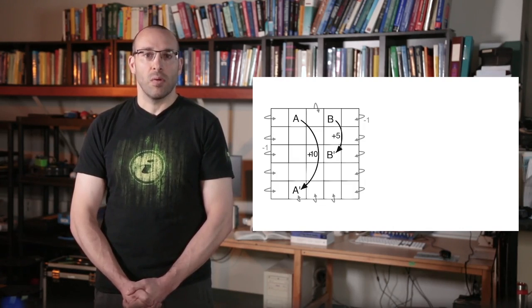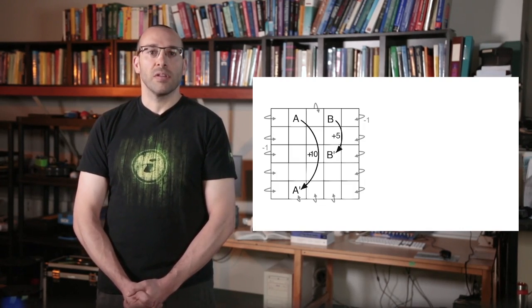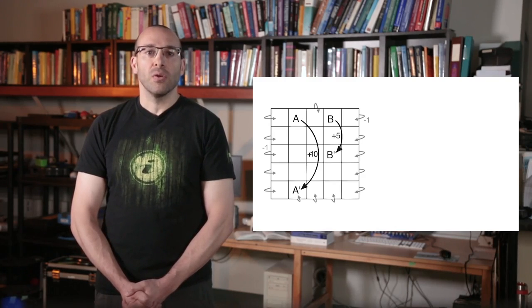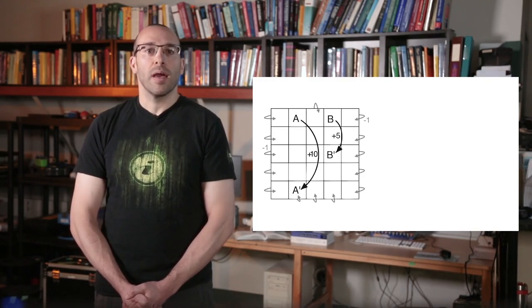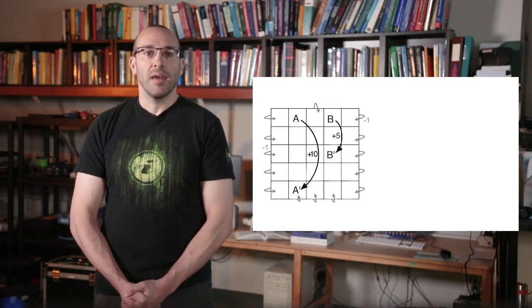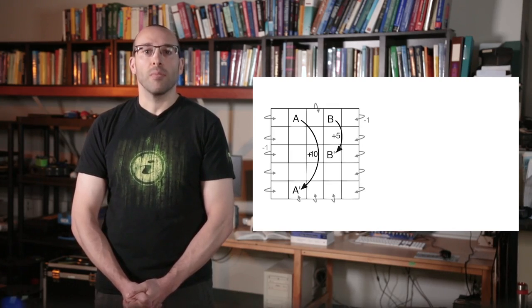There are two special states, however. These special states are labeled A and B. Every action in state A yields plus ten reward, and plus five reward in state B. Every action in state A and B transitions the agent to states A' and B', respectively.